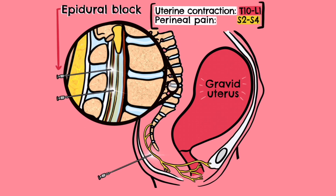An epidural is a way to deliver an anaesthetic to stop pain signals travelling from the spine to the brain. It involves injecting a small amount of anaesthetic into the epidural space of the spine. Nerves responsible for carrying pain signals from the body to the brain — called spinal nerves — are numbed by the anaesthetic injected in the epidural space, for example the spinal nerves associated with T10 to L1 nerve roots. This blocks any subsequent pain signalling.